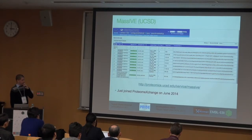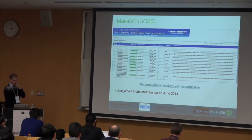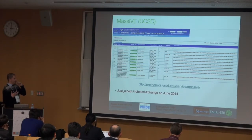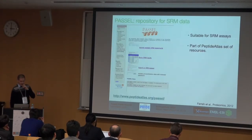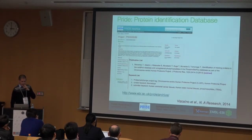This is the interface of MassIVE. You can submit individually to those resources and then the data is published in ProteomeXchange. PeptideAtlas is the resource for SRM data, and this is how PRIDE looks.